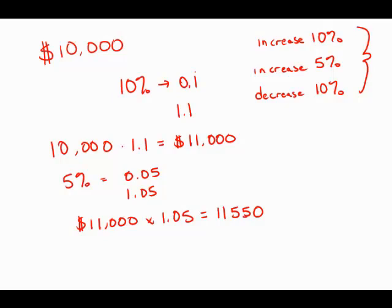Now, a decrease by 10%. 10%, again, as a decimal, is 0.1, but this is negative. So, 1 minus 0.1 is 0.9. That is the multiplier for a decrease by 10%.